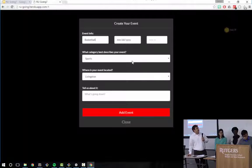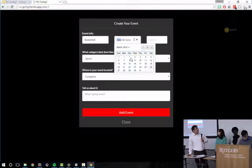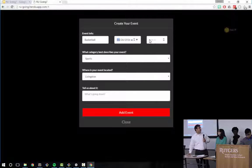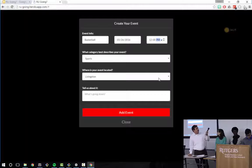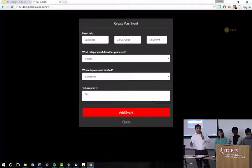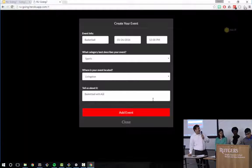So we're going to set up an event, title it basketball, pick a date and a time. And then this is how we sort our events. So specifically we're going to play a sport event on Livingston Campus. Eric will type a note and then he'll click add event, which will add it to our events page.